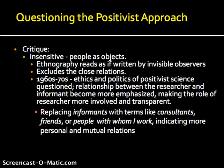Some of the other critiques of the positivist approach are that it was insensitive — that it treated people as objects — and the ethnography reads as if written by invisible observers. It excludes the close personal relations that many anthropologists built over time with the people they were working with. This was part of a larger shift in the politics and ethics of research throughout the 1960s and 70s, where positive science as a whole was questioned. The relationship between the researcher and the informant became more emphasized, making the role of the researcher more involved and transparent.